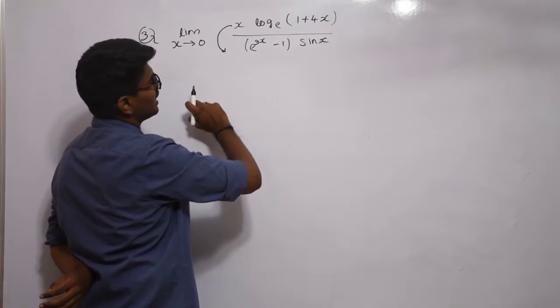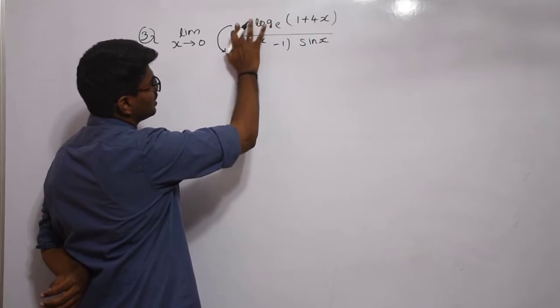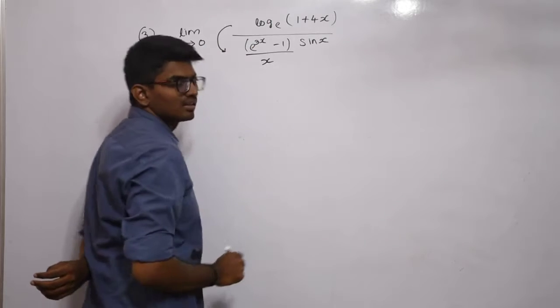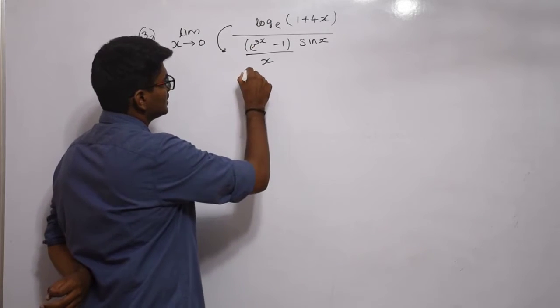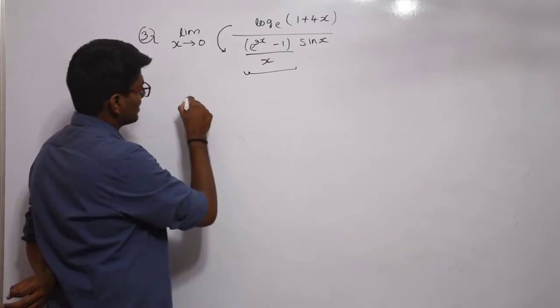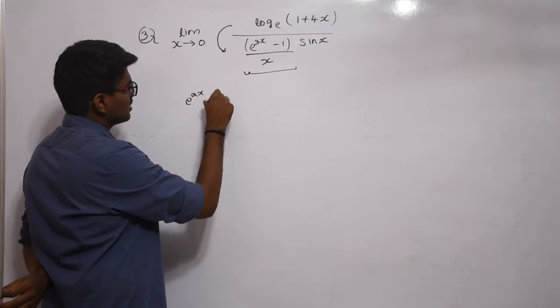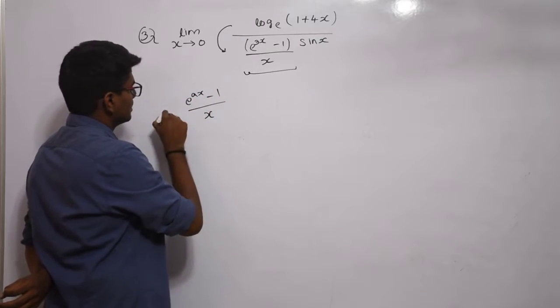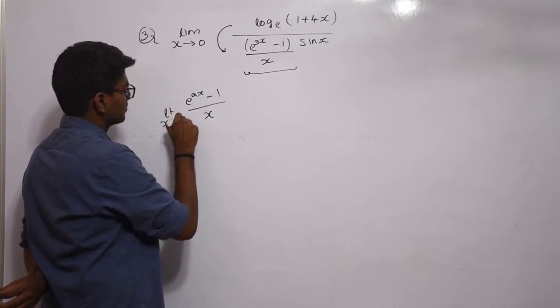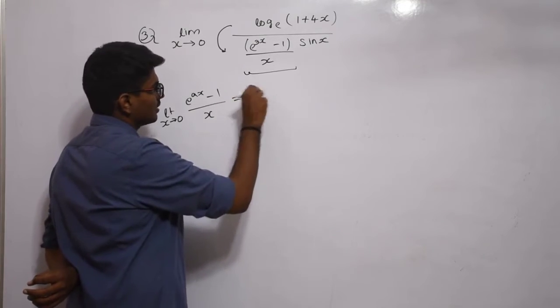Instead of multiplying x in the numerator, I could write x in the denominator. What is this term? We have seen that (e^(ax) - 1)/x, when limit x tends to 0, equals a.